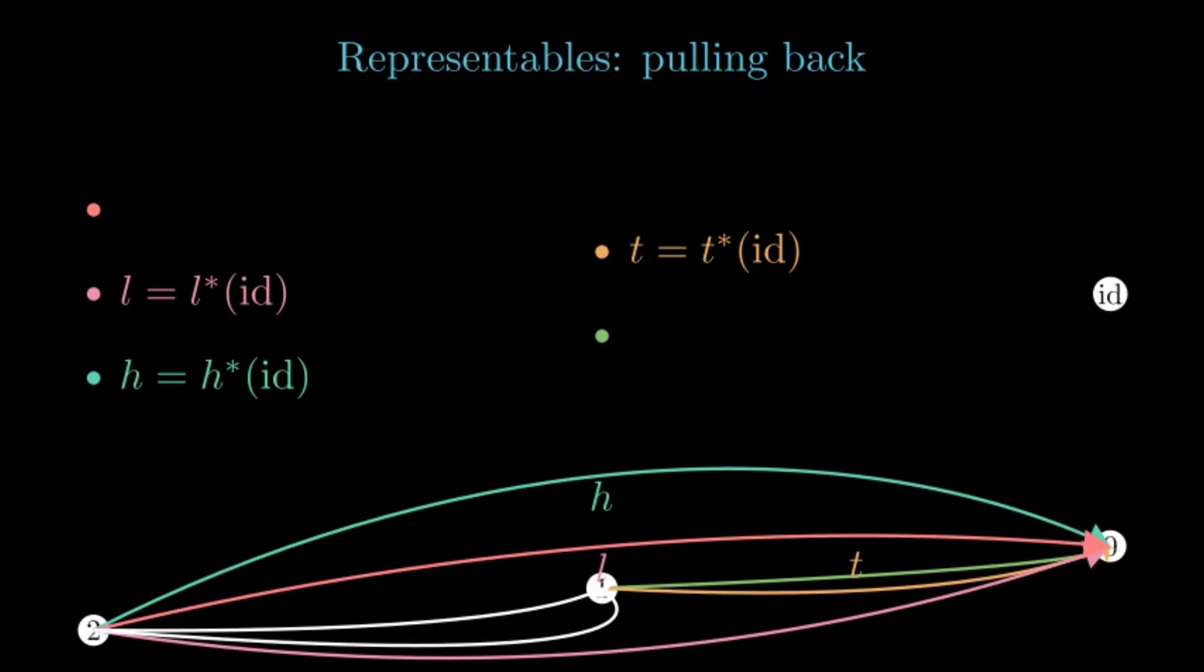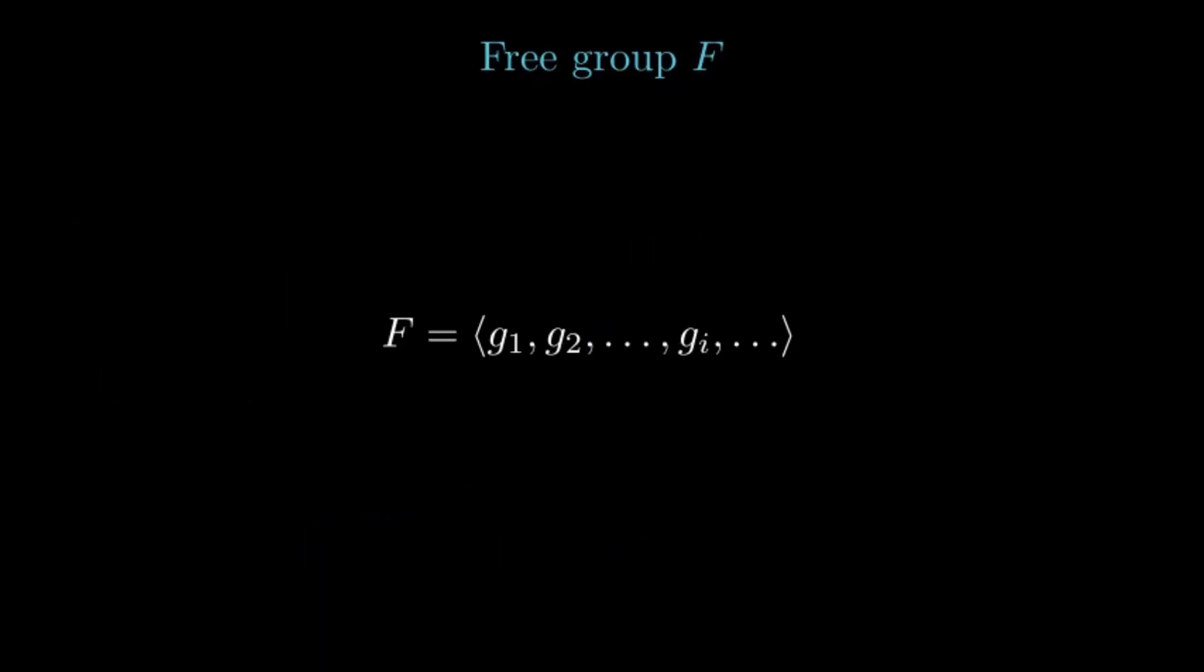Let's get some inspiration from algebra. Recall that a free group on generators g_i is obtained by taking symbols g_i and applying group operations to them with no relations except those coming from group laws. The result is said to be freely generated because it is free from any relations.